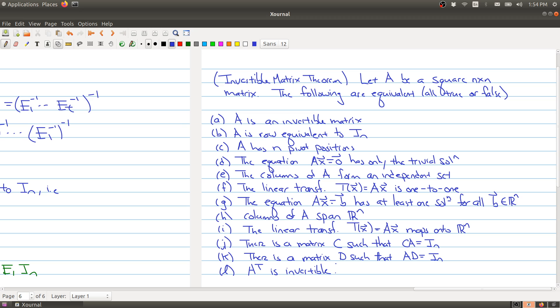Now this theorem here says that if I have a square matrix and it's n by n, then the following are equivalent. You'll see statements like this in math all the time, and when you see something saying the following are equivalent, if you know one of the statements is true they're all true, and if one of the statements is false then they're all false.